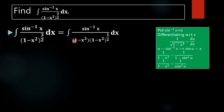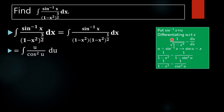We also need to change the remaining term 1 by (1 minus x squared) in terms of u. Since u equals sin inverse x, taking sin of both sides gives sin u equals x. Therefore 1 by (1 minus x squared) equals 1 by (1 minus sin squared u), which equals 1 by cos squared u, using the identity cos squared u plus sin squared u equals 1, giving cos squared u equals 1 minus sin squared u.